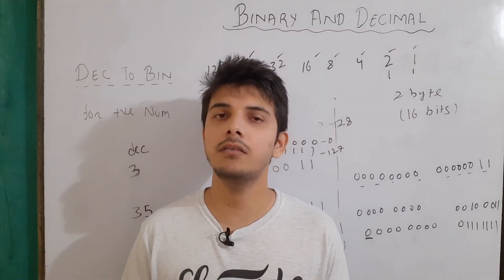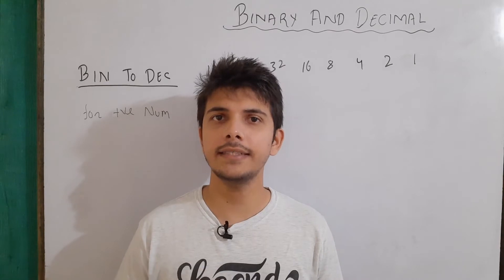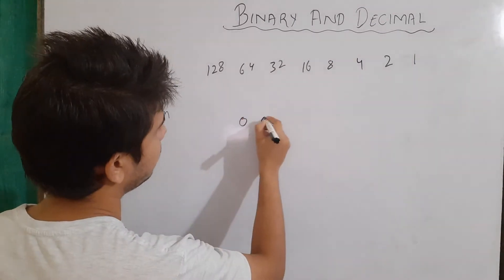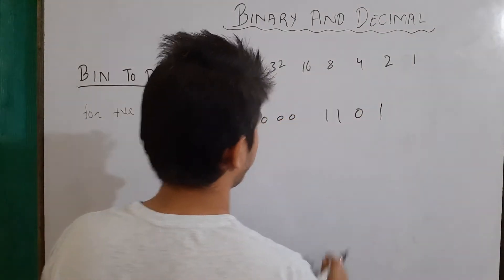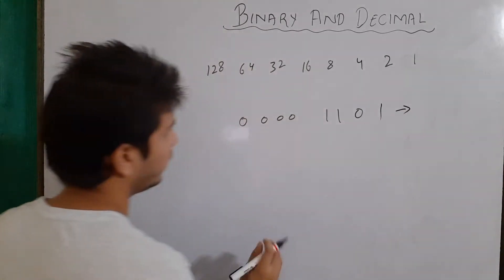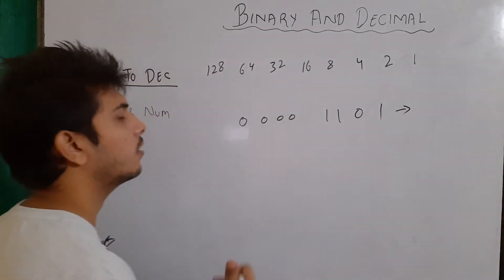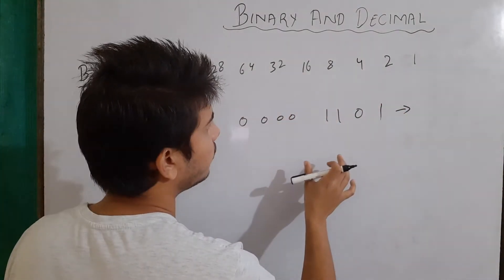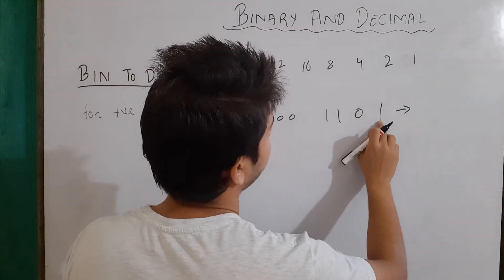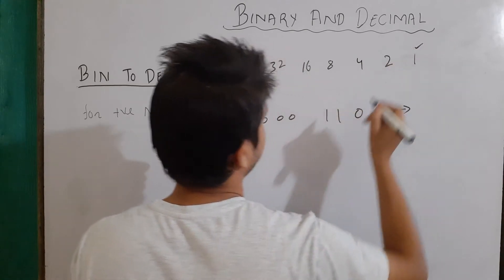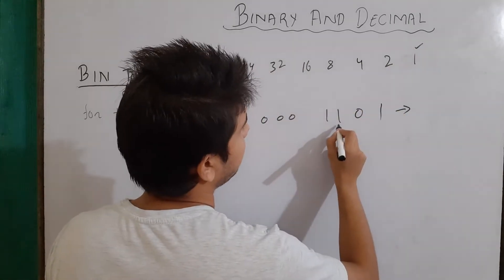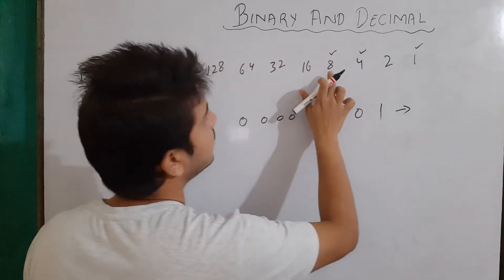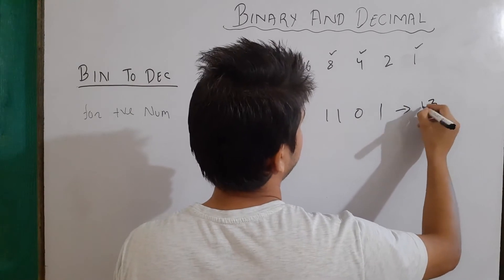Now let's jump to binary to decimal for positive numbers. Let's take the example 0 0 0 0 1 1 0 1. We look at the positions where the bit is 1 and mark those values. Here the 1st, 3rd, and 4th positions from the right are set, giving us 1, 4, and 8. Summing these: 8 plus 4 plus 1 equals 13. So the decimal equivalent is 13.